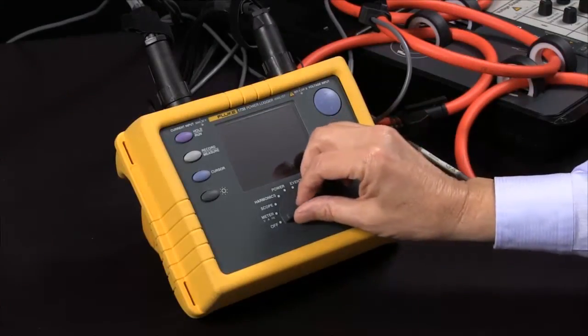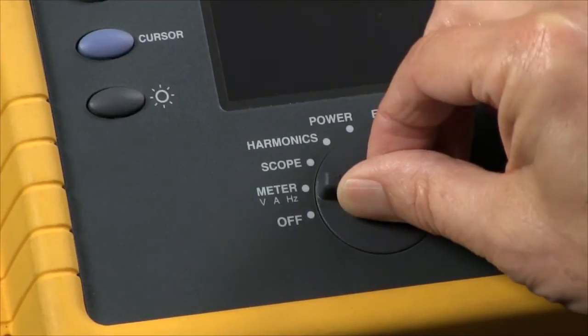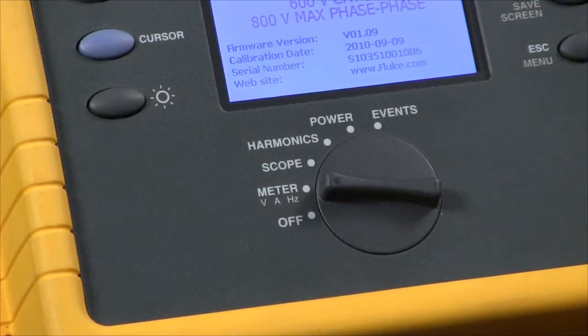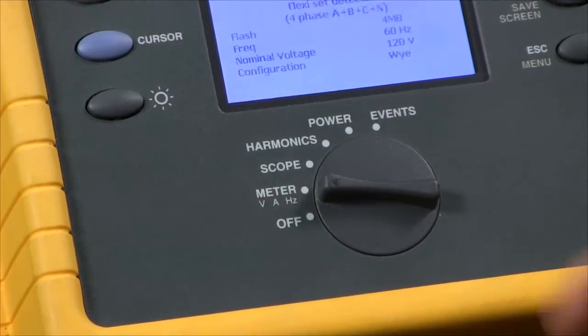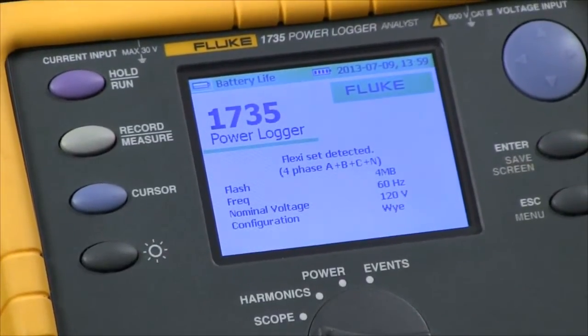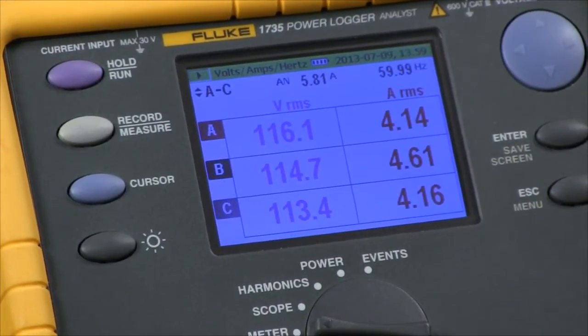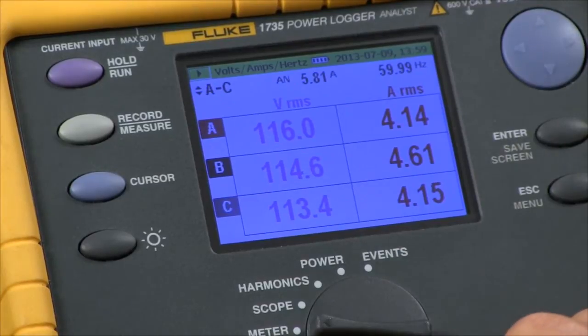Next thing we're going to do is turn the unit on and you'll see the unit come up and it said the flexi set was detected so it detected the clamps and we're in the meter volts amps hertz screen.